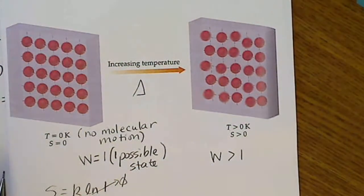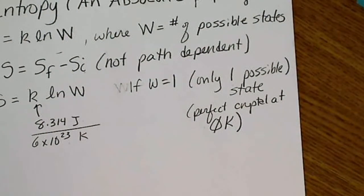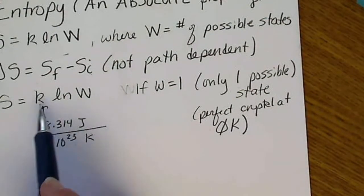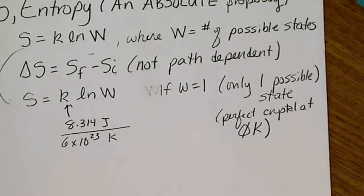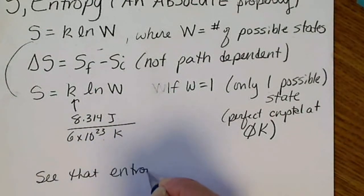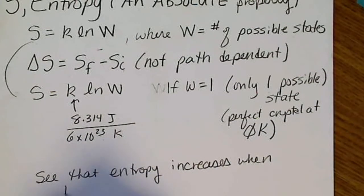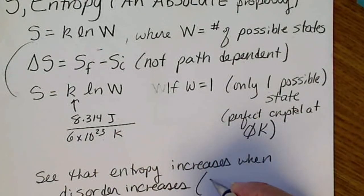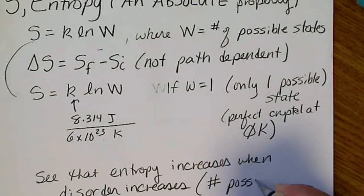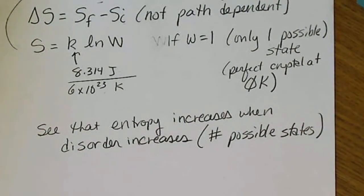We're going to look at a more qualitative view of entropy and focus on the thermodynamic property. From that picture we can see that entropy increases when disorder increases — or again, that's really the number of possible states that any system can be in.